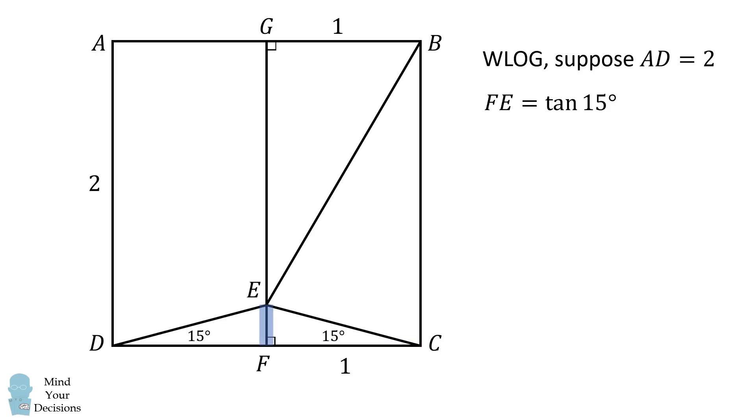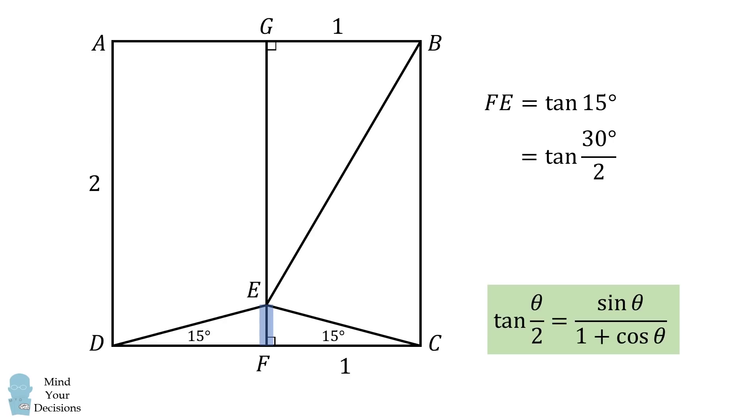From here, FE will be equal to the tangent of 15 degrees, which is equal to the tangent of 30 degrees over 2. We can then use the tangent half angle formula. Tangent of theta over 2 is equal to the sine of theta divided by the quantity 1 plus the cosine of theta.